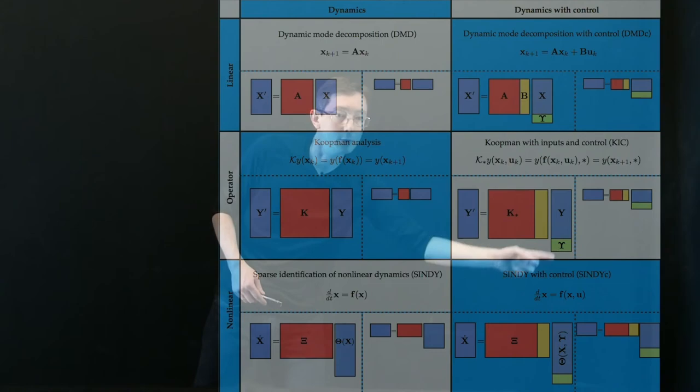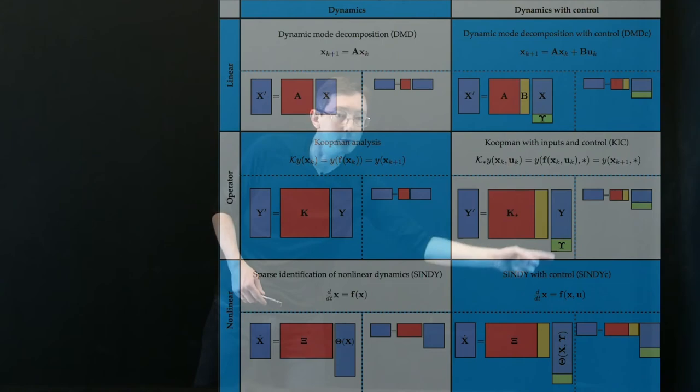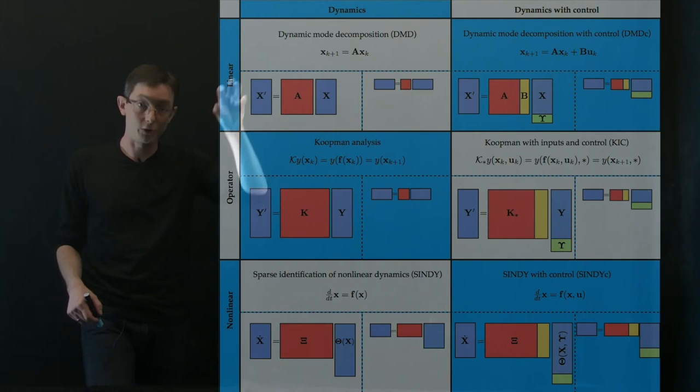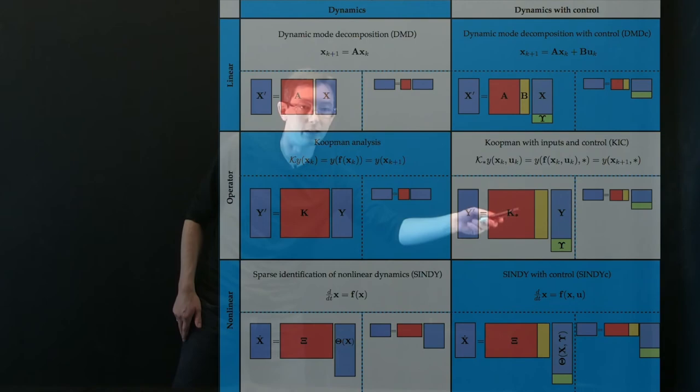And since then, it became pretty clear that you could also do this in the Koopman and SINDY frameworks. So again, if you have these epsilon measurements, you can augment your libraries with the control inputs U, and you can simultaneously find not just the internal state dynamics, but how control affects those.